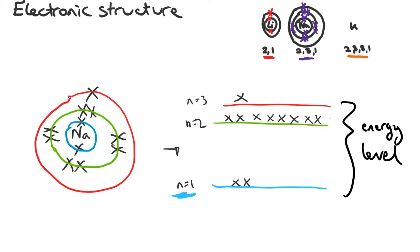The second energy level is higher in energy, represented by this green line, and it houses a total of 8 electrons. The third energy level, n is equal to 3 for sodium, just has 1 electron in it and that is the one furthest from the nucleus and also has the highest energy. We are going to expand on energy levels a little bit in the next video.